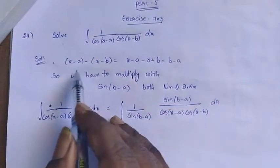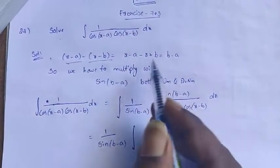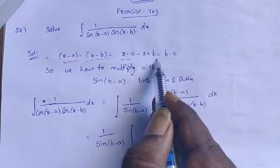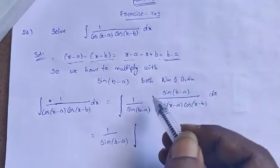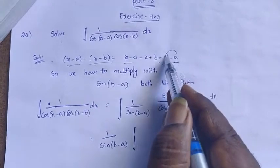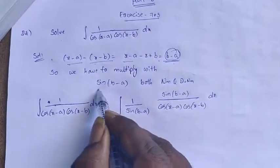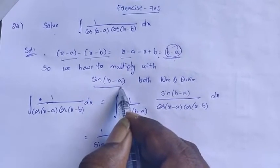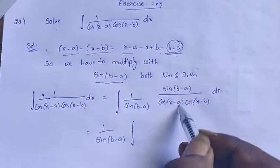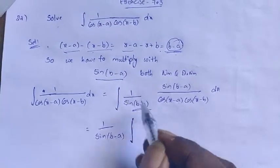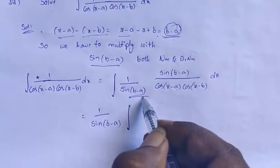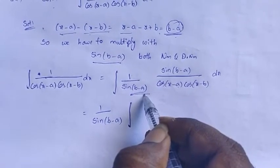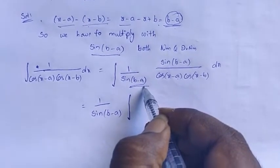Coming to the solution, x minus a minus (x minus b) equals x minus a minus x plus b, which is b minus a. Now using this b minus a, I am assuming sin(b minus a) and multiplying the given question both numerator and denominator with sin(b minus a). Now 1 by sin(b minus a), which is a constant, will be taken out from the integration.